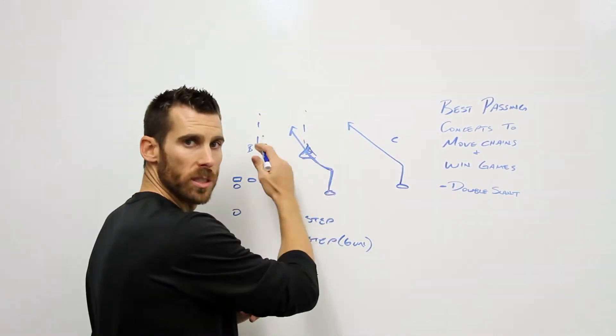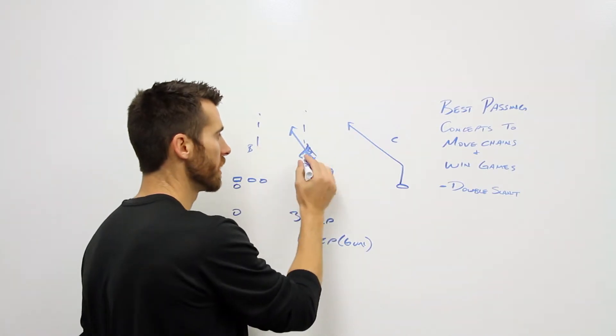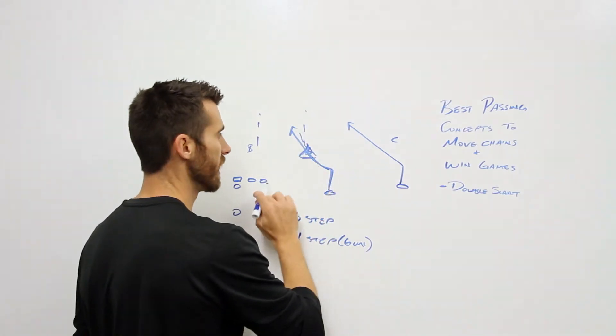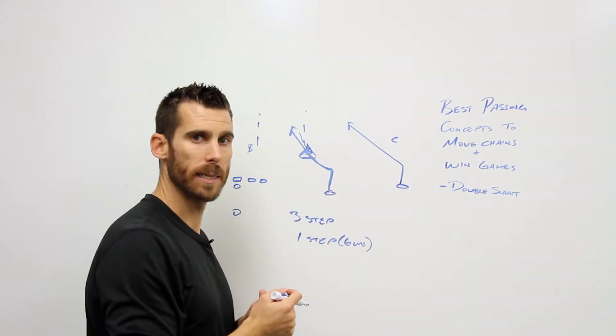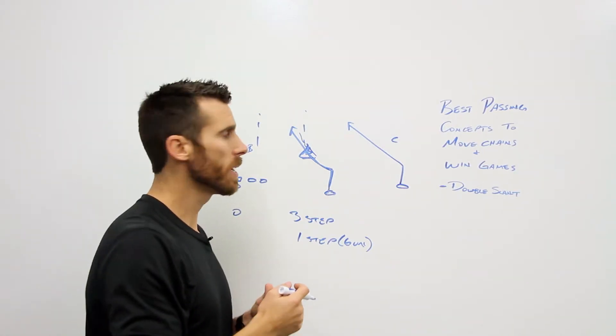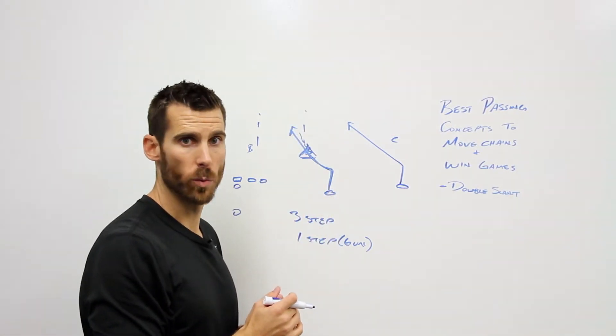Now if this guy collapses that, walls that off and collapses that, and starts carrying that, obviously he gives us the throwing lane for the outside slant. Which is a really easy read to make and is going to give us a great run after catch right there as well.